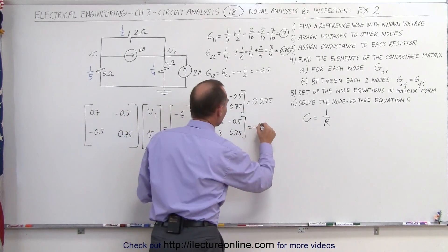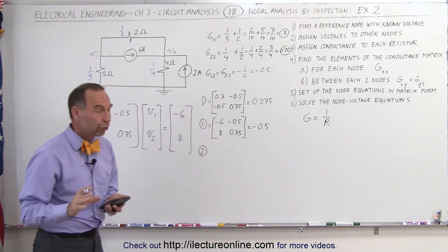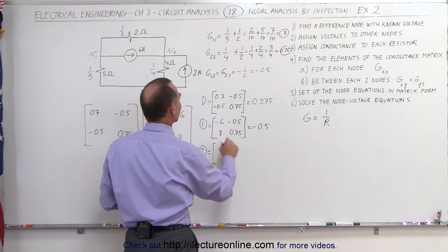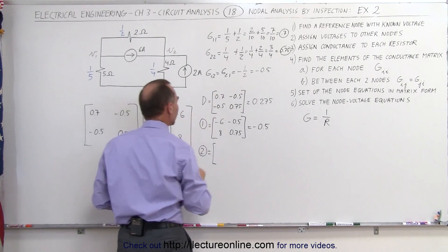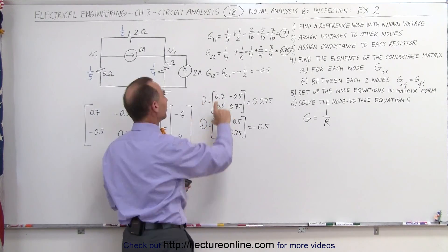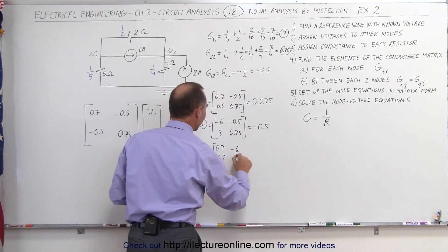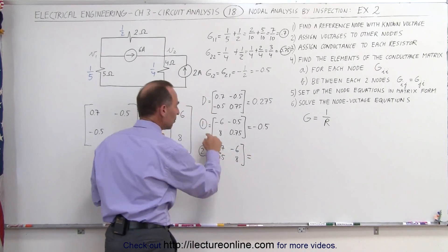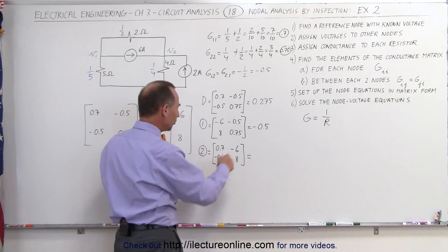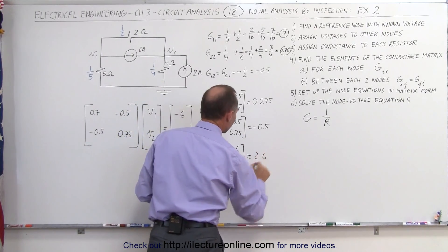The second matrix allows us to find the voltage for node 2. We replace the second column with the current matrix, retaining 0.7 and minus 0.5, and replacing the other elements with minus 6 and 8. We multiply: 0.7 times 8 is 5.6, and we subtract the product of minus 0.5 and minus 6, which is minus 3, giving 2.6 for that matrix.